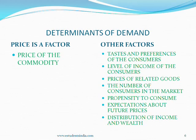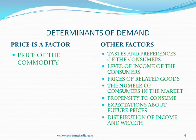Determinants of demand are the factors which determine demand for goods. First, price of the commodity: when price of a commodity falls, the consumer can buy more quantity of the commodity, hence demand rises. Also, when the price falls, it becomes relatively cheaper than other goods, so new consumers will come and demand rises. Similarly, when the price rises, demand falls. There is an inverse relationship between price and demand.